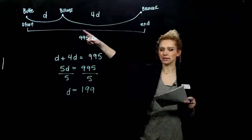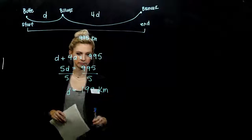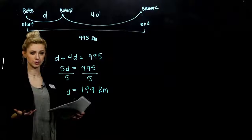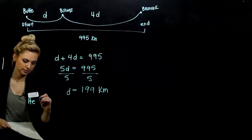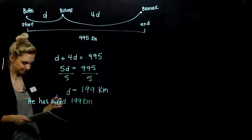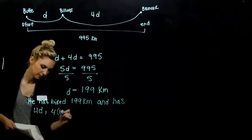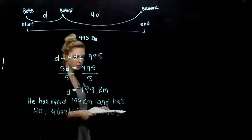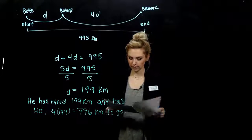And what is d? We let d represent a distance. So what units should we have on that variable? Kilometers. And what was d? Only one part of the question have we answered. D is the distance from Butte to Billings, so that's as far as he's traveled so far. And how far does he have left to go? Four times this. We always like to write a little sentence. He has biked 199 kilometers to Billings, and has four times 199, which is 796 kilometers to go.